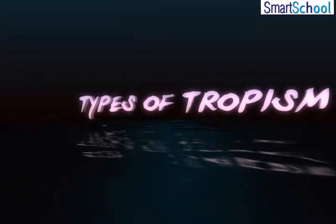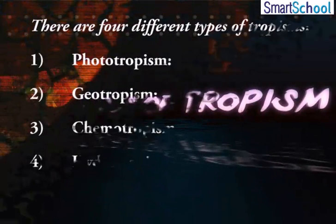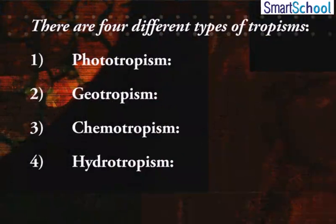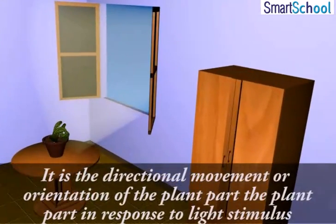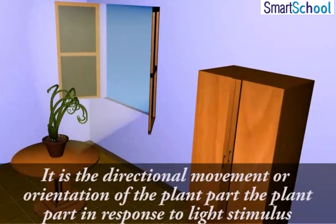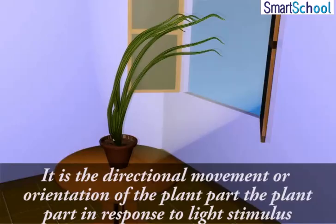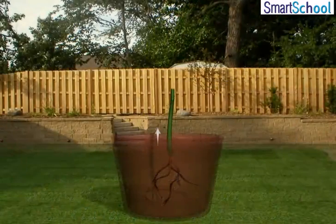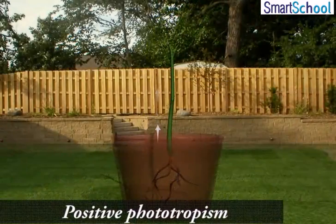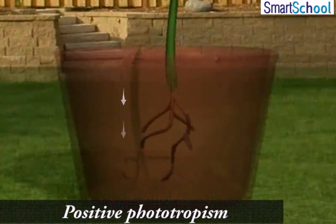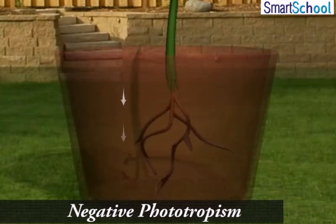Types of Tropism. There are four different types of tropism. 1. Phototropism: It is the directional movement or orientation of the plant's part in response to light stimulus. If the plant's part moves towards the light, it is called positive phototropism. If the plant's part moves away from light, it is called negative phototropism.